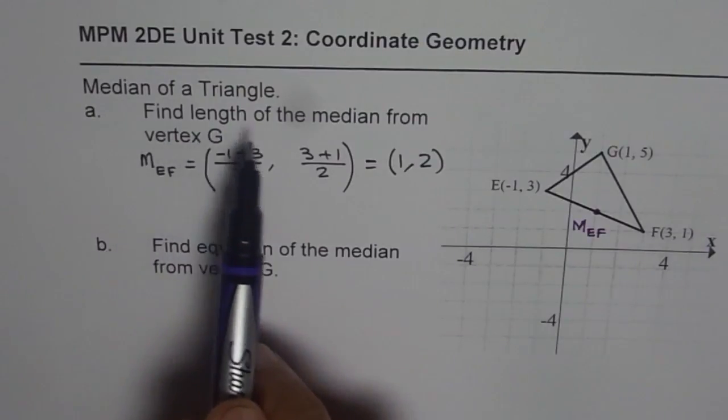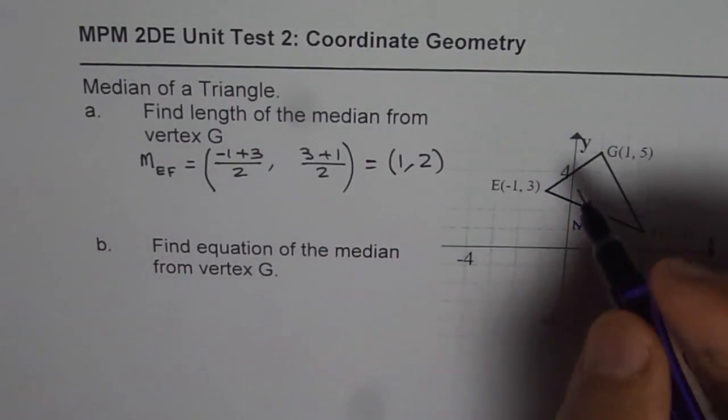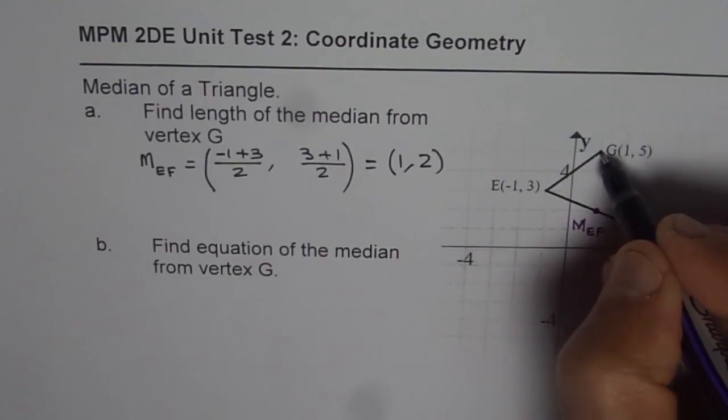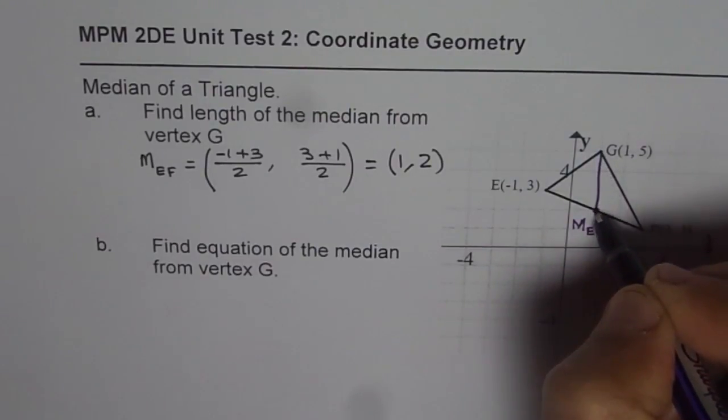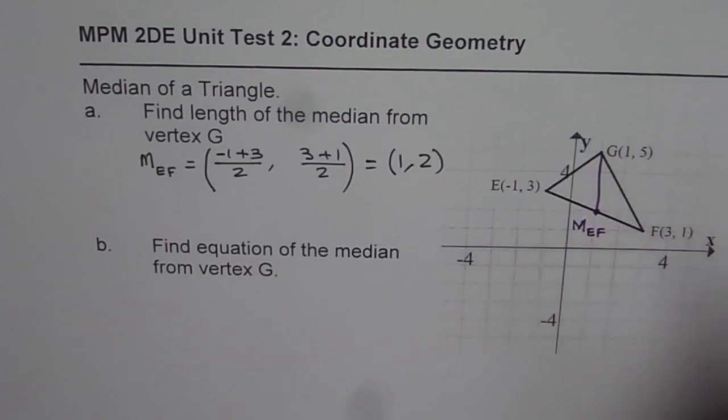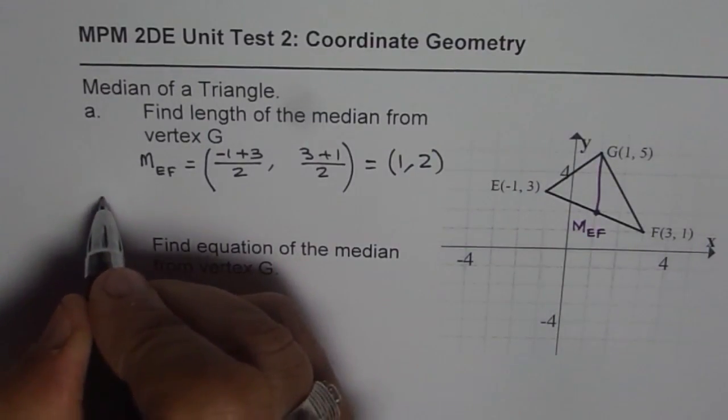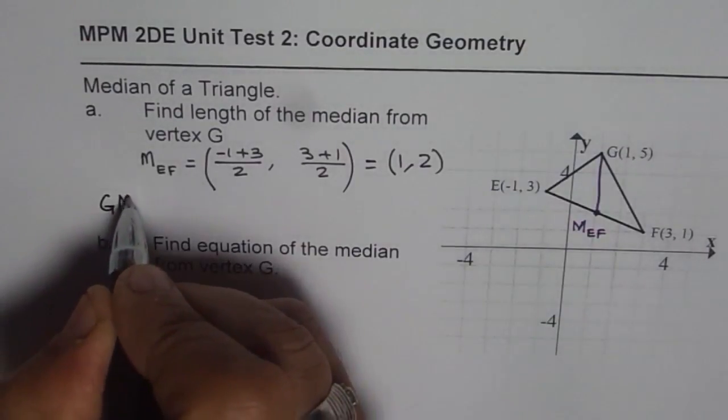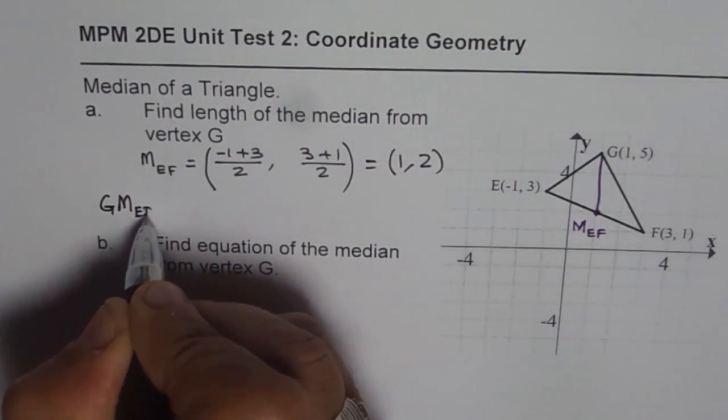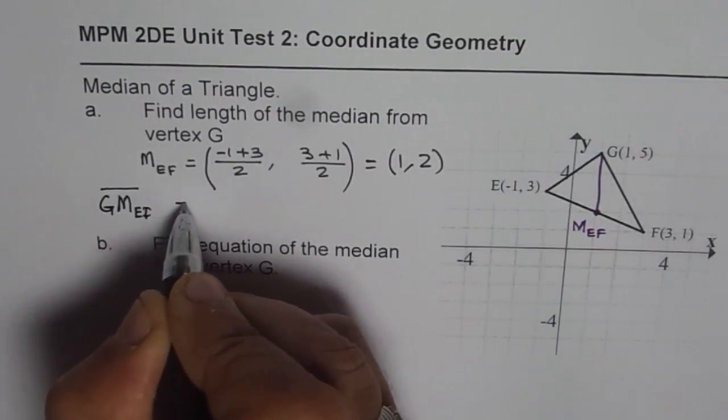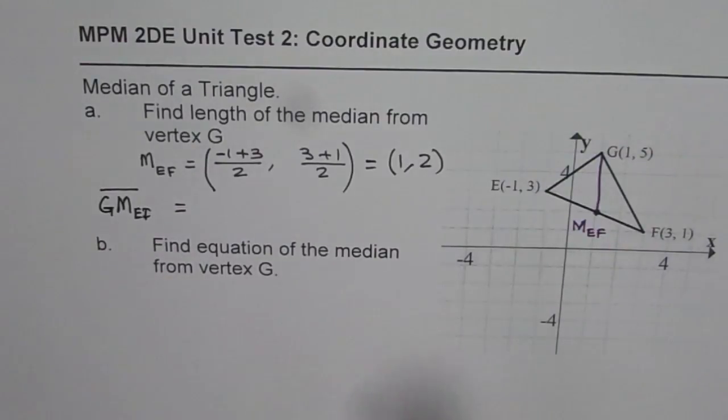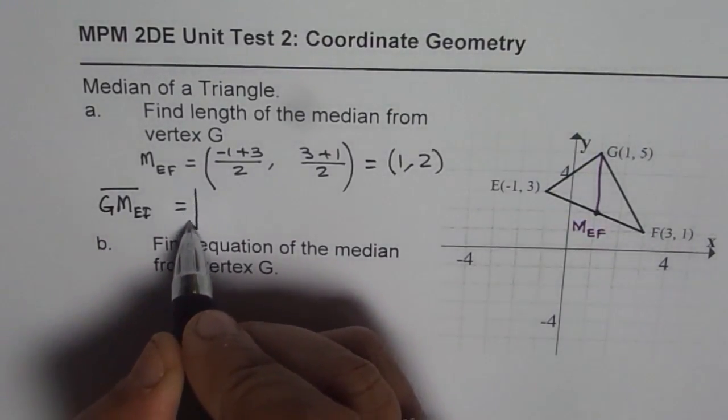We need to find length of the median. That means if I connect these two points, then what is the length? That is what we need to find. So let's find length of this median, which is from G to M_EF. We need to find the length of this. We should use calculator and figure out the answer.